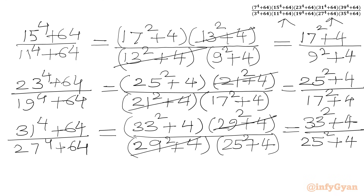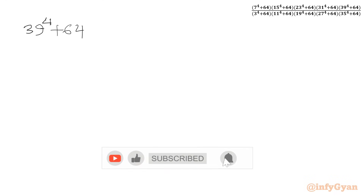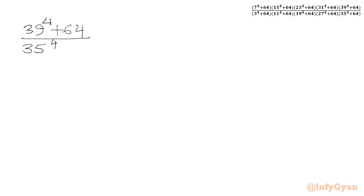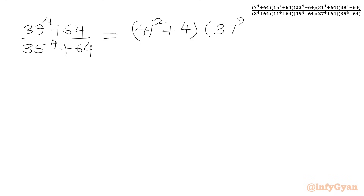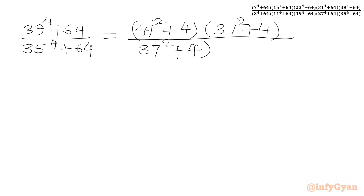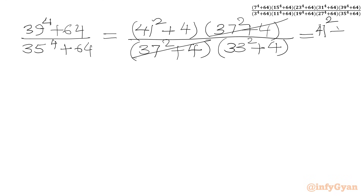Now the last ratio: 39⁴ + 64 over 35⁴ + 64. With a = 39: (39 + 2) = 41, so 41² + 4; (39 − 2) = 37, so 37² + 4 in the numerator. In the denominator with a = 35: (35 + 2) = 37, so 37² + 4; (35 − 2) = 33, so 33² + 4. We cancel (37² + 4), giving (41² + 4) over (33² + 4).